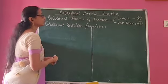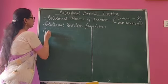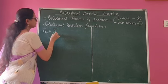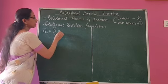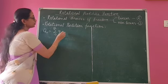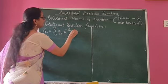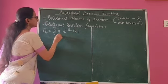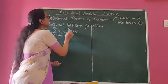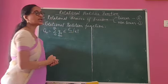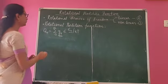Let's see how we can write the rotational partition function. As we have written for translation, in the same way we will write a summation from 0 to infinity. Here it will be g_r times e to the power minus E_r upon kT, where g_r is the statistical weight factor for the rotational energy level and E_r is the rotational energy level. These are the two quantities we require for calculating the partition function.